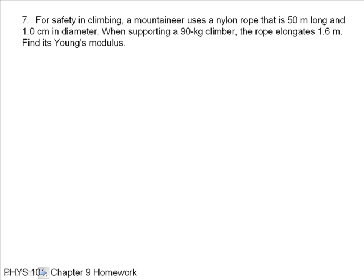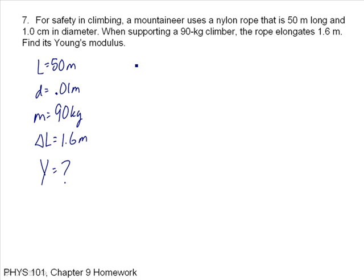For safety in climbing, a mountaineer uses a nylon rope that is 50 meters long and 1 centimeter in diameter. So the diameter is 1 centimeter, that's .01 meters. When supporting a 90 kilogram climber, the rope elongates, that's delta L, by 1.6 meters. It stretches by almost meter and a half when this fairly big guy hangs from the rope. I want to find out what is the Young's modulus equal to. Know that the pressure, that is force over A, is equal to the Young's modulus times delta L over L, the ratio of how much it stretches to how long it is. So we just solve this for Y.